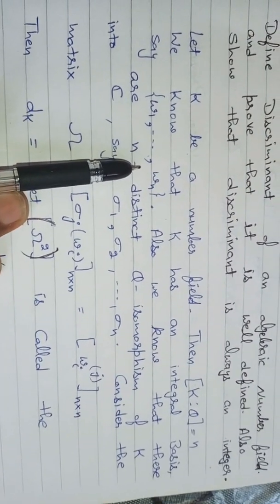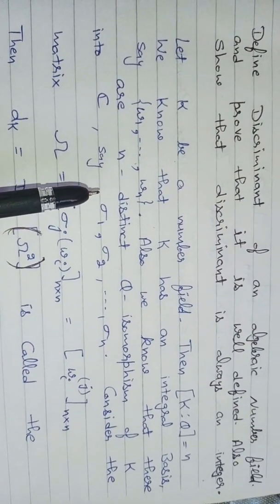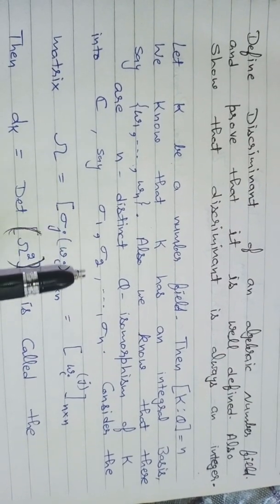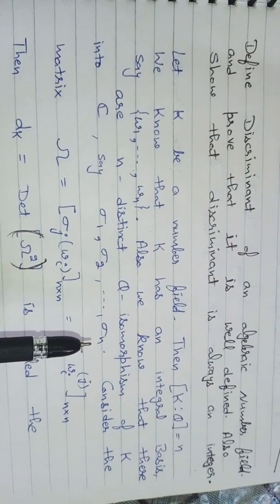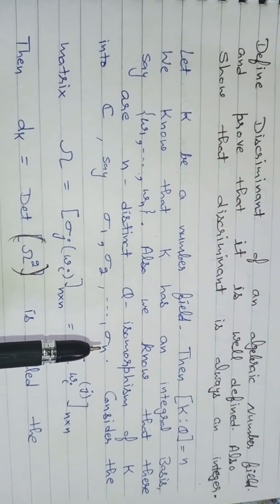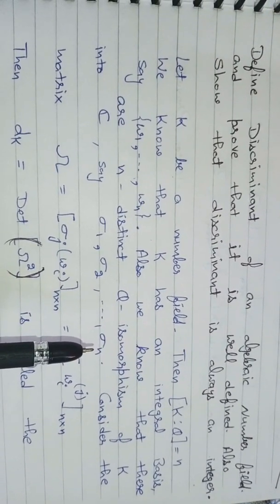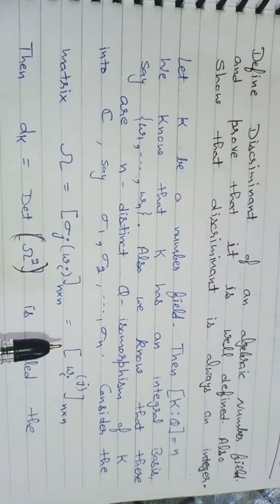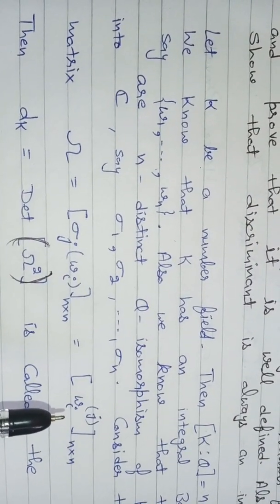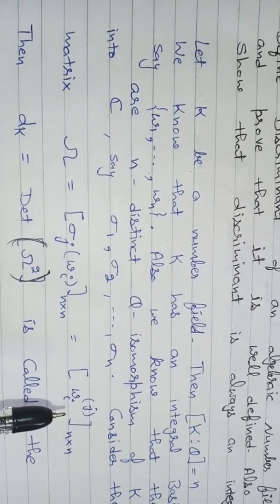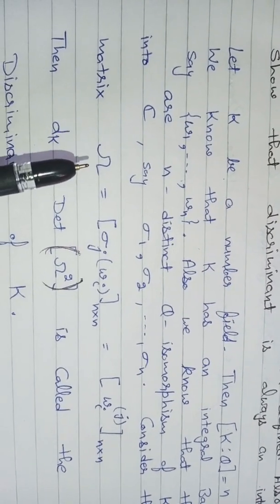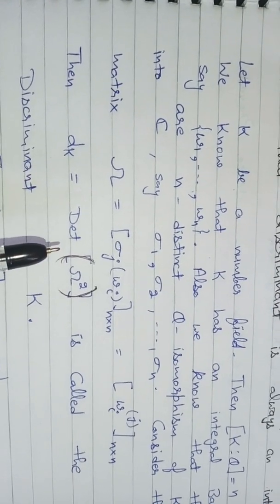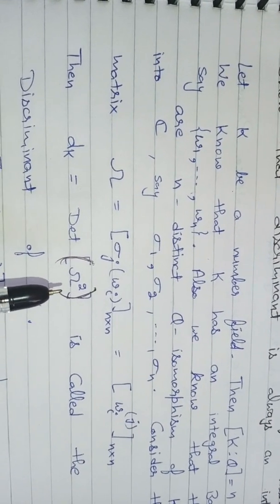We also know that there are n distinct Q-isomorphisms of K into C, say sigma_1 to sigma_n, where n is the degree of K over Q. We consider a matrix whose entries are sigma_j(w_i), also written as w_{ij}, where w_{ij} are the conjugates of w_i. We call this matrix Omega.